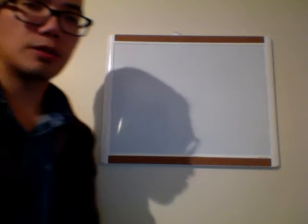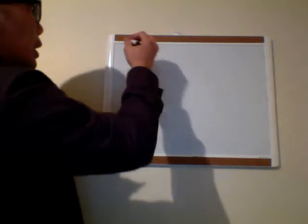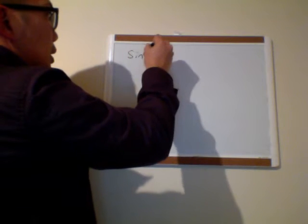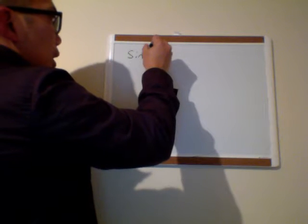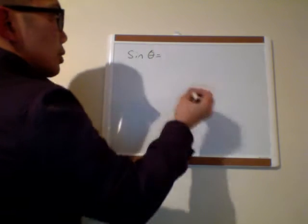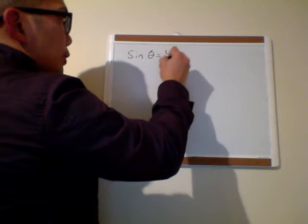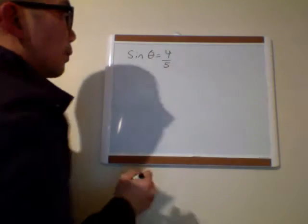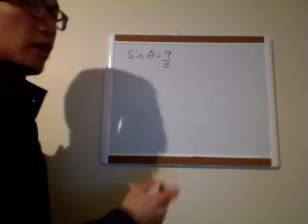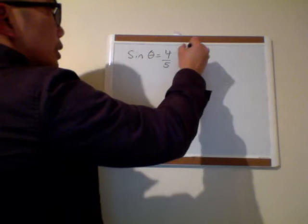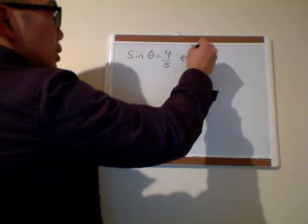I'm going to go over two examples on how to find the rest of the trig functions if you're given one trig function and you know which quadrant you're in. So let's say they give you that the sine of theta is equal to 4 over 5, and they tell you that you are in quadrant 2.